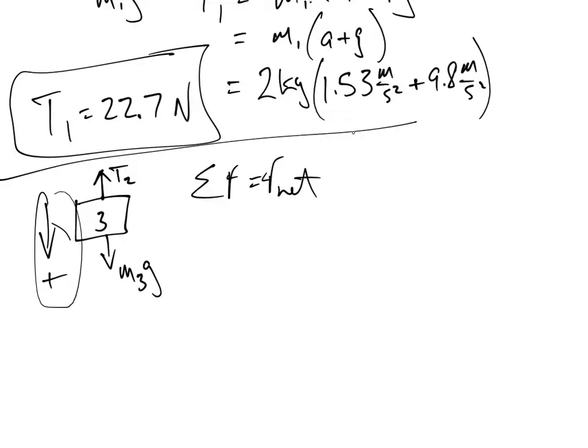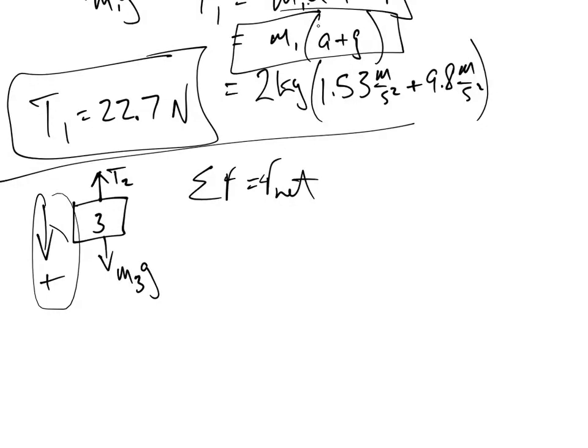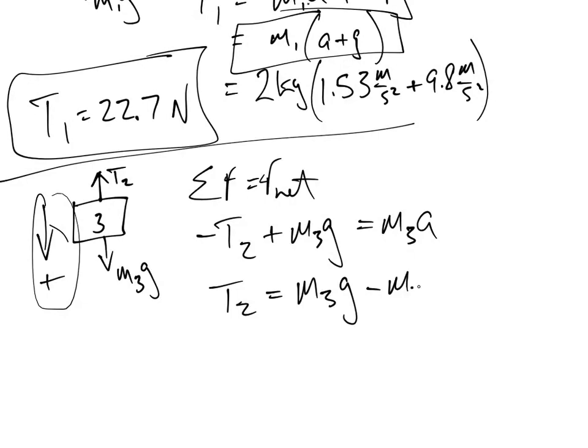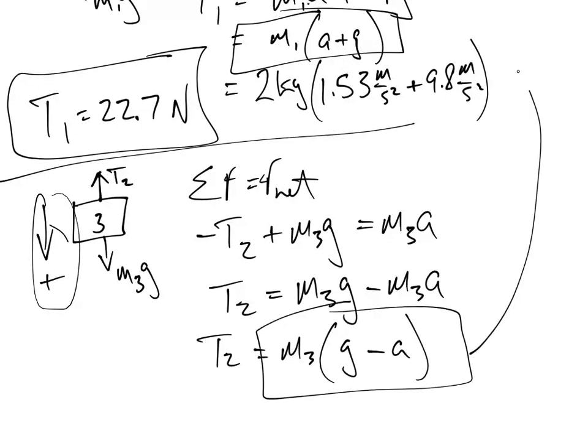Watch. Before, what did it create? We had this here, right? Let's see what happens now. Now, it's going to be negative T2 plus M3G is going to equal M3a. Because this is in the negative direction. So now, we're going to have T2 is going to equal M3G minus M3a. Factoring out the M3. Notice the difference. This and this are not the same. That's a consequence of our positive direction.